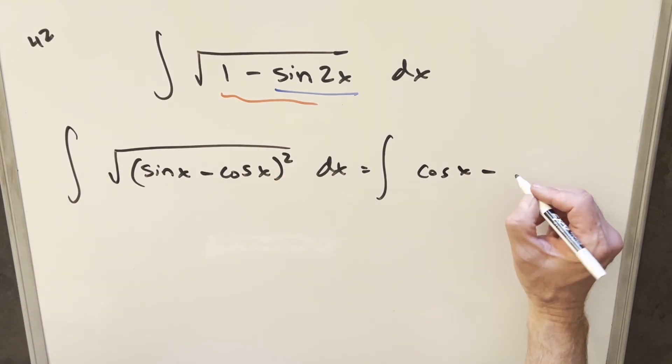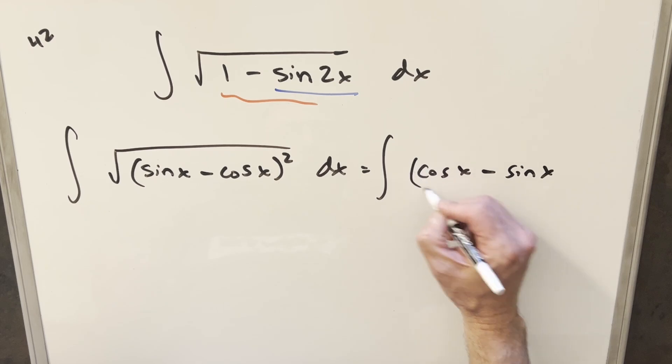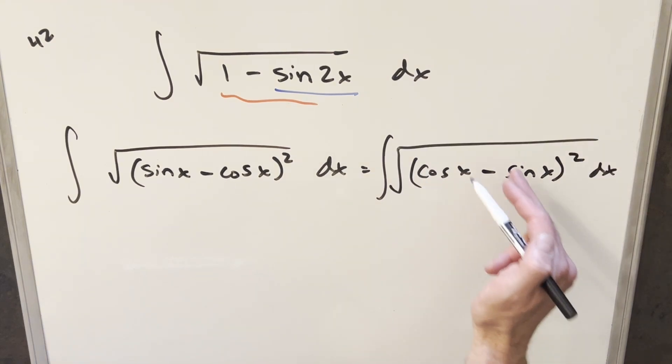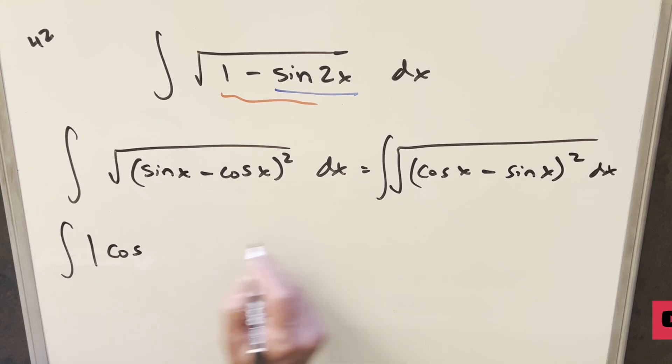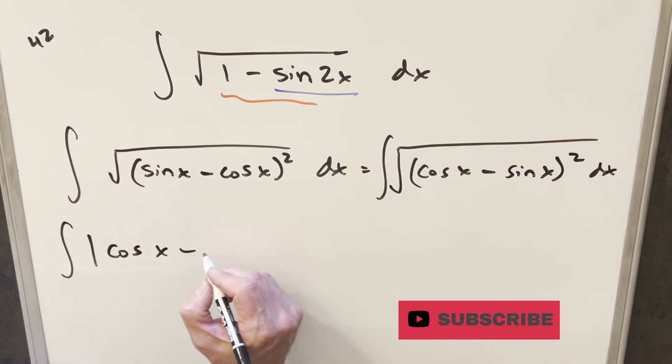So I'll write it like this just to set it up. But now, of course, this is squared inside the square root, so what we can do is rewrite this, and we can get rid of the square root and write it as absolute value cosine x minus sine x.